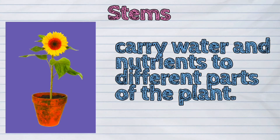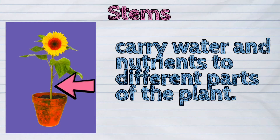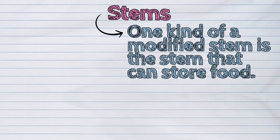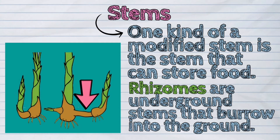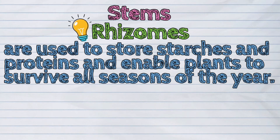The stems, on the other hand, carry water and nutrients to different parts of the plant, and can become a modified plant part too. One kind of modified stem stores food. Rhizomes are underground stems that burrow into the ground, used to store starches and proteins, enabling plants to survive all seasons. An example of this is ginger.